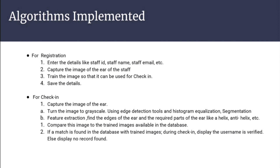For registration purposes, once the details of the user are entered along with the image of the ear captured, as soon as the submit button is clicked, the image goes to the server for training. In training, a single image is converted into 120 different images using different image processing and pre-processing techniques. As soon as training is completed, the data is saved into the database.